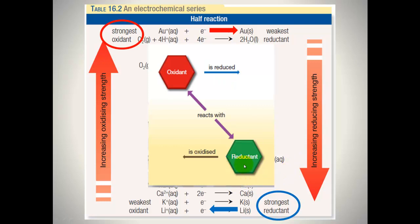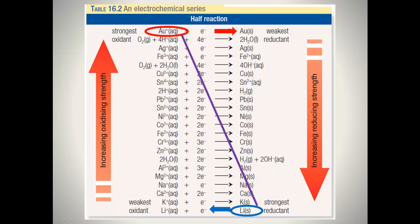Whereas the reaction underneath it must be occurring in a backwards direction. So you need a species — an oxidant — with a reductant on the right hand side below the oxidant for the reaction to occur. For example, this is one of the most vigorous reactions that will occur.